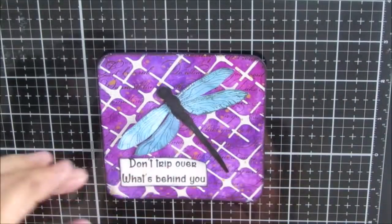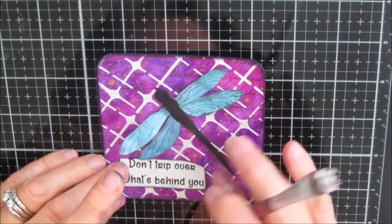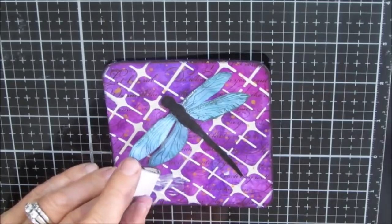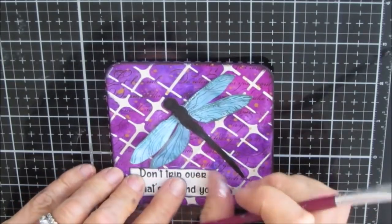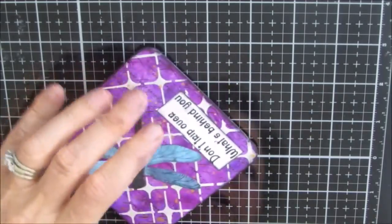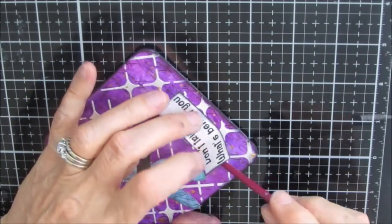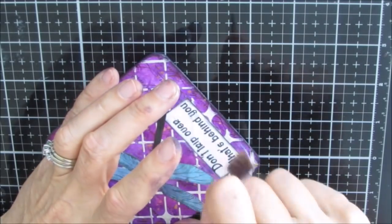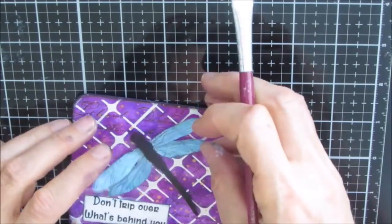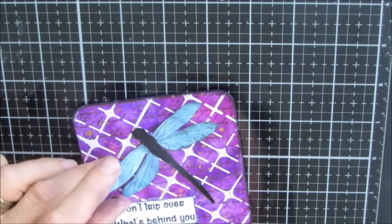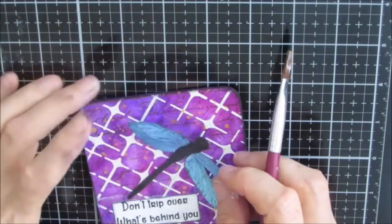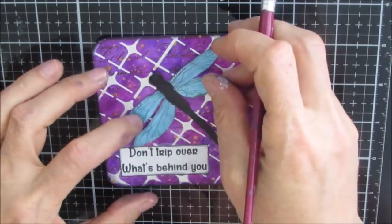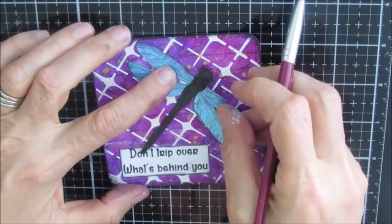I'm using my matte gel and I am simply going to glue down my sentiment, which I've also edged with the archival ink that I just pressed into the ink pad and then applied with a makeup sponge. If I wanted the dragonfly to be kind of 3D, I would have also painted the under wings, just so everything's painted.